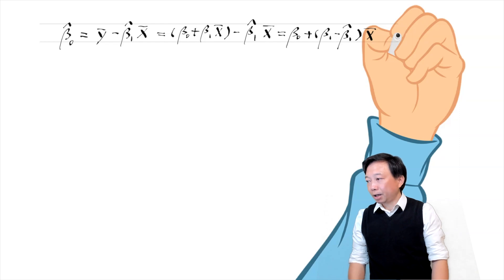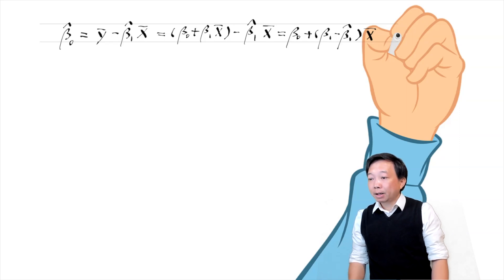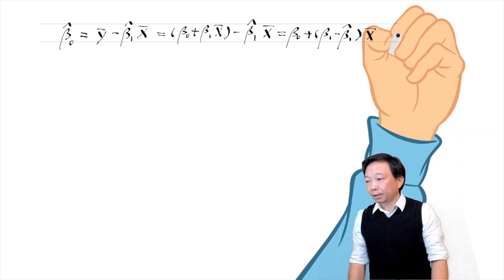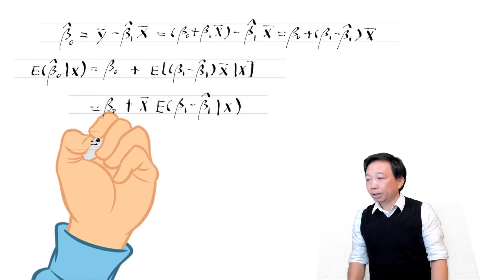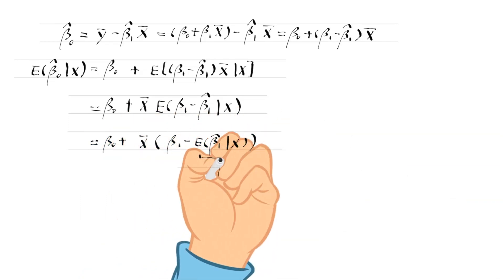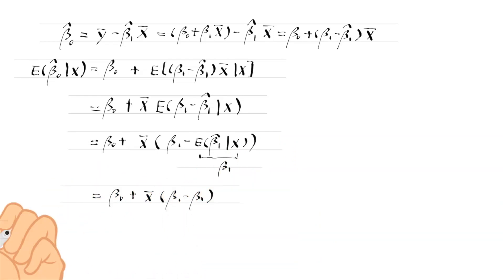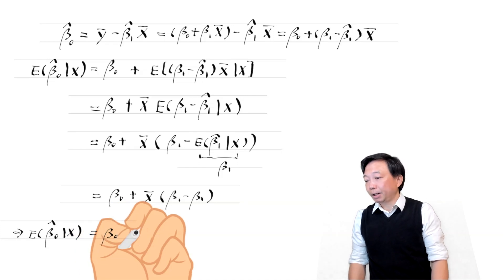We can also prove that the OLS intercept estimator is unbiased. Recall that the intercept estimator equals y bar minus beta 1 hat times x bar. After substituting the expression of y bar, we can write beta 0 hat as two terms. The first term is the population parameter beta 0. We need to show that the expectation of the second term conditional on x is zero. Using the result that beta 1 hat is an unbiased estimator of beta 1, we can show that the expected value of beta 0 hat equals beta 0. That is to say, the OLS intercept estimator beta 0 hat is an unbiased estimator of beta 0 under the zero conditional mean assumption.